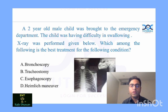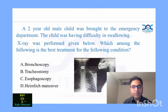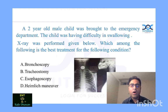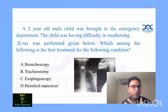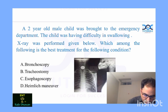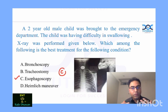There is no role for tracheostomy or the Heimlich maneuver, as those are meant for airway foreign bodies. Bronchoscopy is also not indicated — there is no history of cough and no evidence of a bronchial foreign body. So the answer to this question is C: esophagoscopy, specifically rigid esophagoscopy, to remove the foreign body.